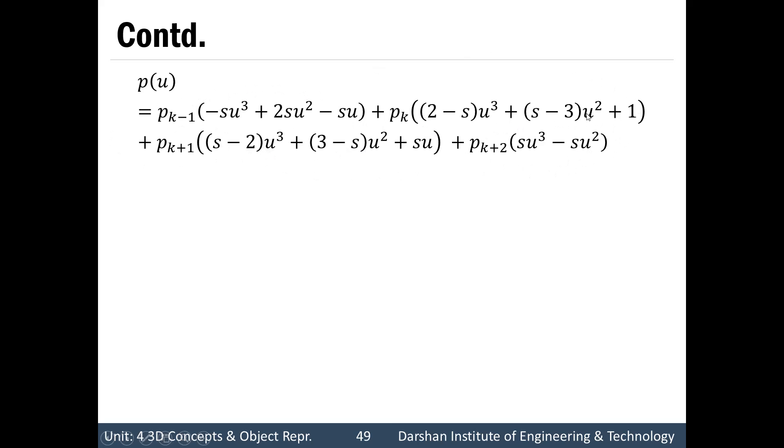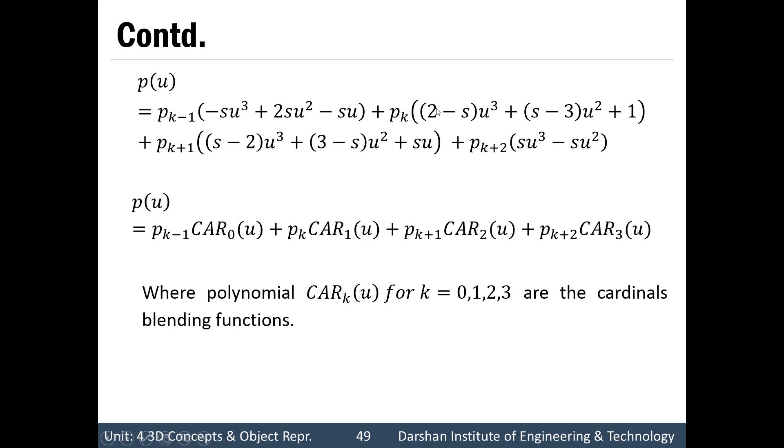Because it is similar to Hermit interpolation, we are going to represent it with the cardinal blending function. And it is denoted by CAR₀(u) similarly for CAR_k(u) for k equals 0,1,2,3 and that is known as cardinal blending function. Here we can see we are having all 4 control points so we need not to specify any extra first order derivatives.